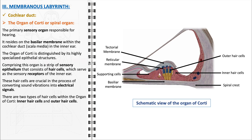In contrast, the outer hair cells are more numerous and serve as mechanical amplifiers, enhancing the movement of the basilar membrane in response to sound. By altering their length in response to sound vibrations, outer hair cells amplify low-level sounds and improve the precision of the cochlea's frequency-selective filtering. This action is essential for the ability to hear soft sounds and for the fine-tuning of frequency discrimination, contributing to the clarity of sound perception.